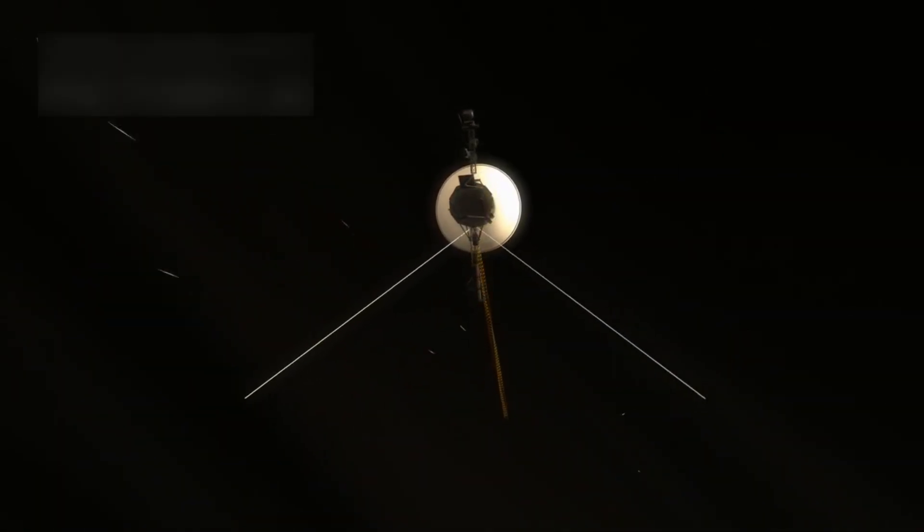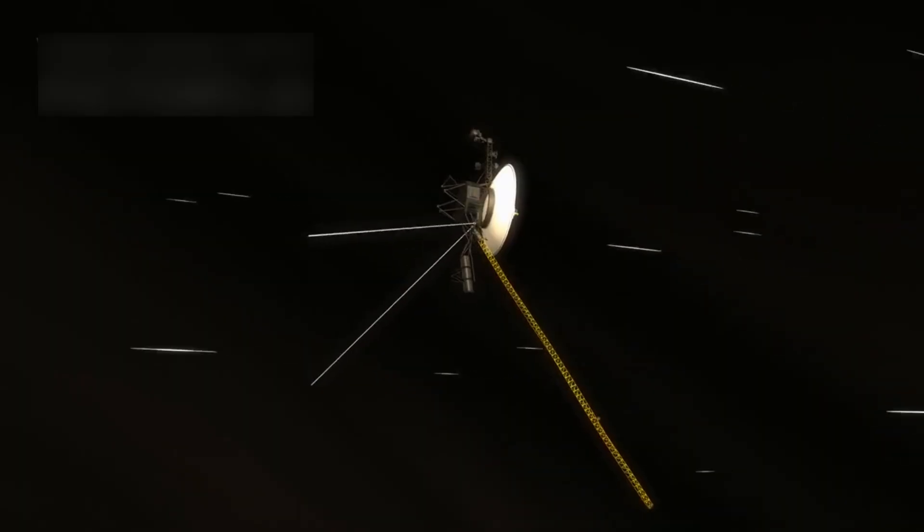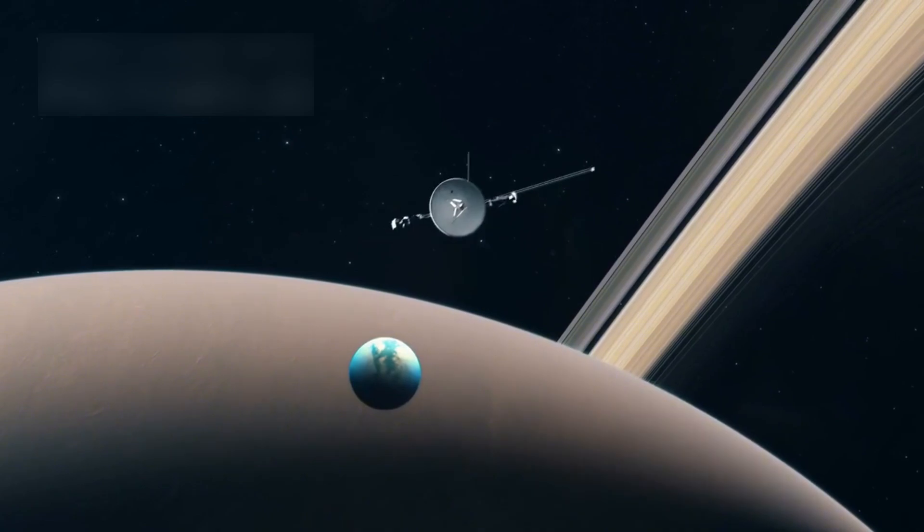As Voyager 1 kept flying, it continued to operate decades past its expected lifespan. It has now been working for over 45 years, traveling more than 14 billion miles from Earth.